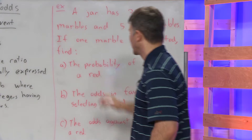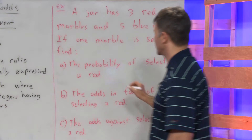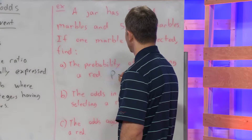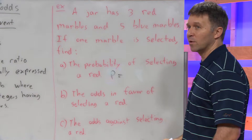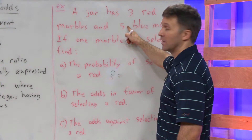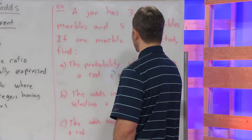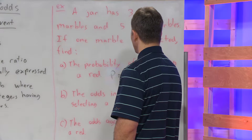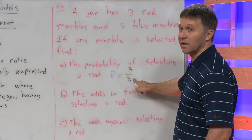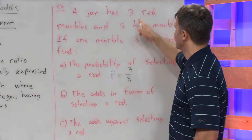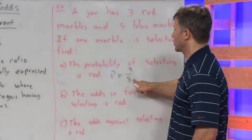Part a: the probability of selecting a red. There are three red ones and eight total marbles, so the probability of selecting a red is going to be three over eight. I got the eight from three red plus five blue, which gives us eight total marbles.